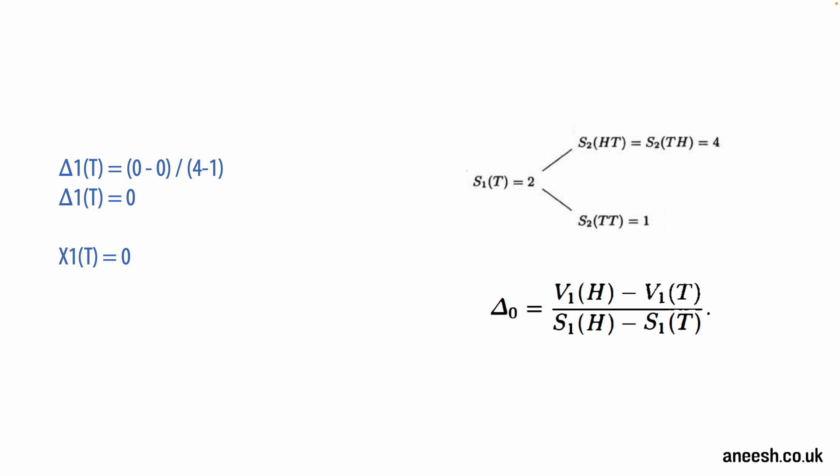We write this as delta 1(T) equals 0. Given there's no expected value for the option following a first coin flip of tails, the value of the option is 0 and X1(T) is 0.